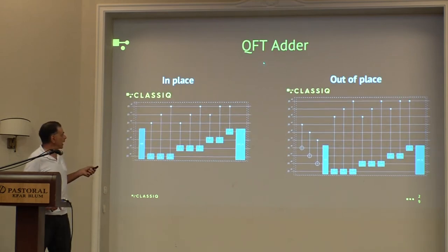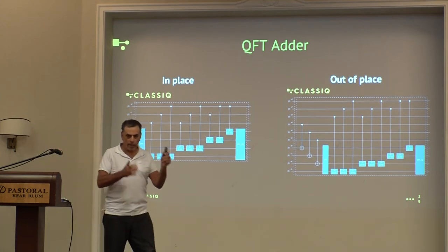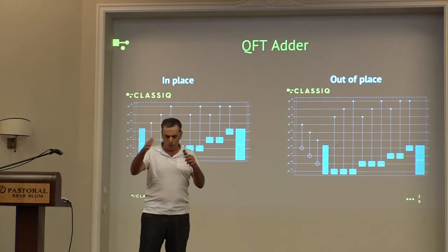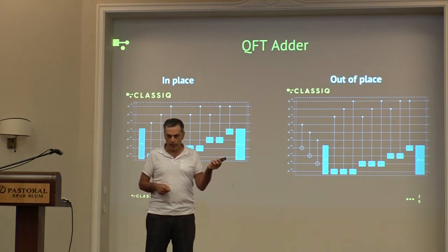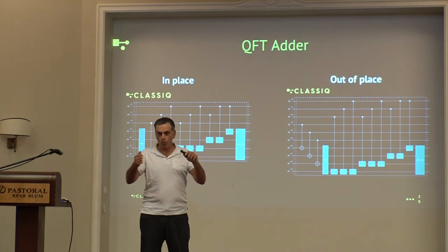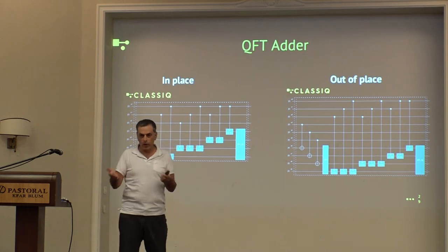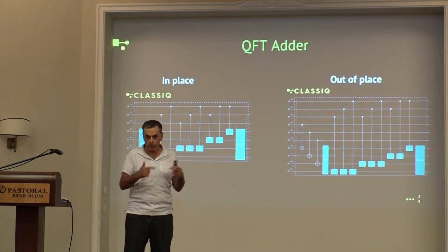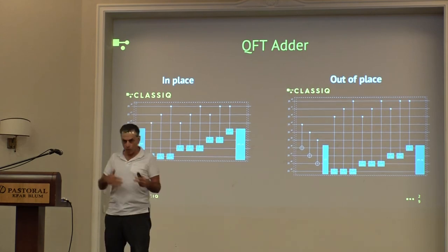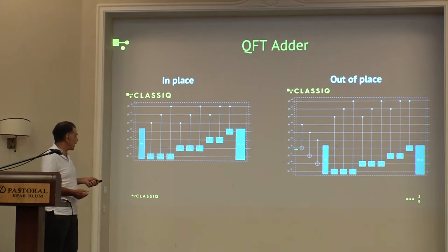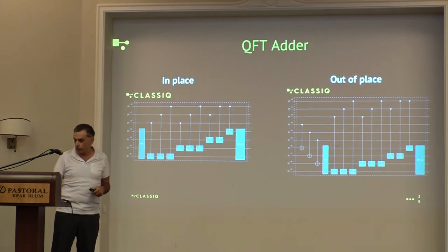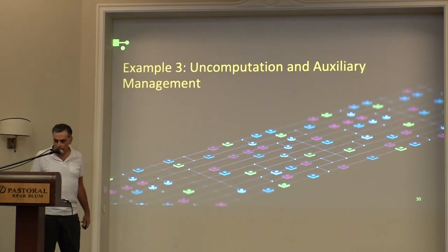You can also use a QFT adder — do the addition in Fourier space. You have A plus B equals C. You can put C in-place of one of the inputs and save qubits, but then you need to uncompute B to avoid entanglement between your inputs and other registers — you have to do this carefully. Machinery should do it for you. Addition in Fourier space is a completely different algorithm, same functionality, with different trade-offs depending on where you want to do what.